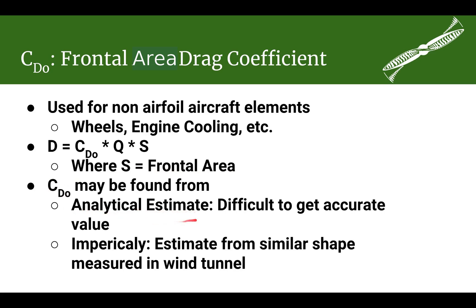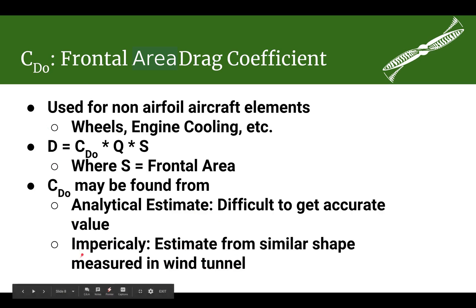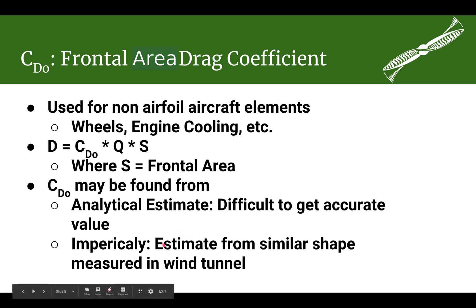One way is to try to use an analytical method, though it is pretty difficult to get a very accurate value. You could also use software to try to estimate it, which is still difficult but probably better than an analytical method. Another method, which still is not accurate, is to do it empirically: find an airplane or shape similar to the one you are trying to calculate the drag on, find out what its frontal area drag coefficient is, and use that for your object. You might find an airplane with a fuselage shape similar to yours, or find aerodynamic data on wheel pants and use that coefficient for your parts.